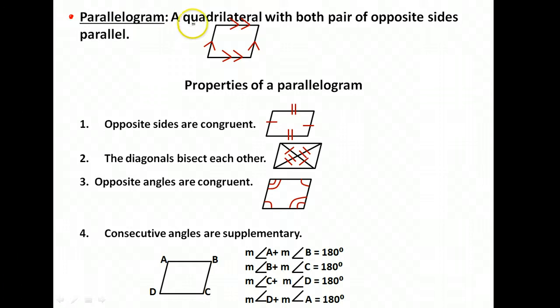Here's the definition of a parallelogram. It's a quadrilateral, so something with four sides, with both pair of opposite sides parallel. So what that means is, notice by our markings, this side is parallel to this side, and this side is parallel to this side. So two pair of parallel sides. That's the definition.